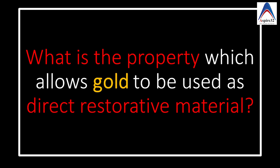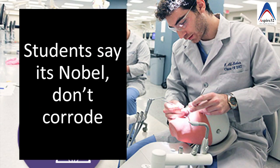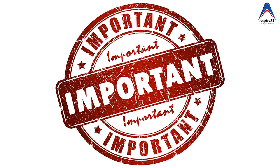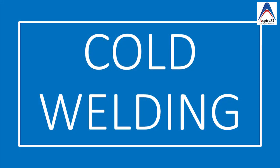And when I ask my students that what is the property of the gold which allows it to be used as a direct restorative material, most of the time students will tell me that it's a noble metal, it doesn't corrode and most of those other important properties which we'll also cover in this video. But there is one most important property which you have to mention first when somebody asks you about gold as a direct restorative material and that is the property of cold welding.